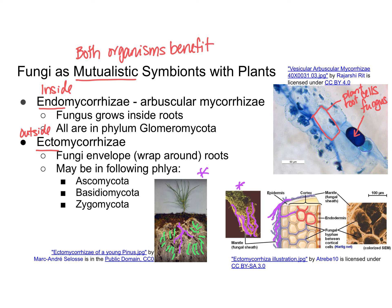Both organisms benefit from this relationship — in fact, some plants and fungi are not able to live independently of each other. The fungi break down larger macromolecules into smaller components and provide those nutrients to the plant, including critically important nitrogen and phosphorus. The plant benefits the fungi because plants can do photosynthesis, making carbohydrates that the fungi can feed on. The fungi and plants can also provide each other with protection in the form of thorns, spines, or the production of toxins.